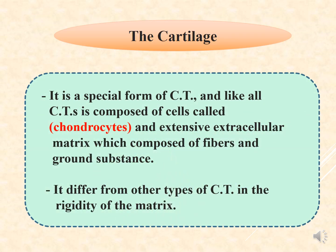Cartilage is a special form of connective tissue. Like all connective tissue, it is composed of cells called chondrocytes and an extensive extracellular matrix composed of fibers and ground substance. But it differs from all other types of connective tissue in that cartilage is characterized by the rigidity of its matrix.